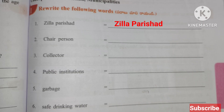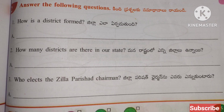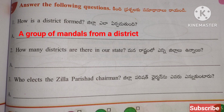Worksheet Three: Rewrite the following words — Zilla Parishad, Chairperson, Collector, public institutions, garbage, safe drinking water. Answer the following questions: How is a district formed? A group of mandals form a district.